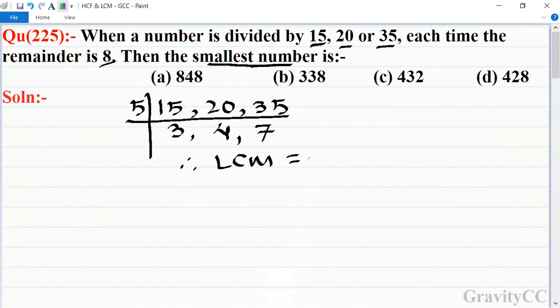Therefore, their LCM is equal to 5×3×4×7, which equals 420. This number is exactly divisible by 15, 20, and 35.